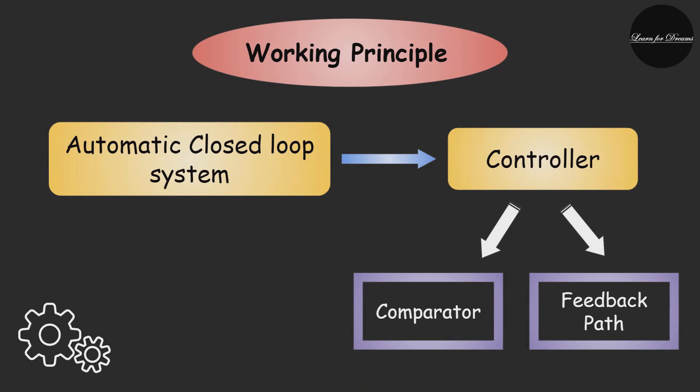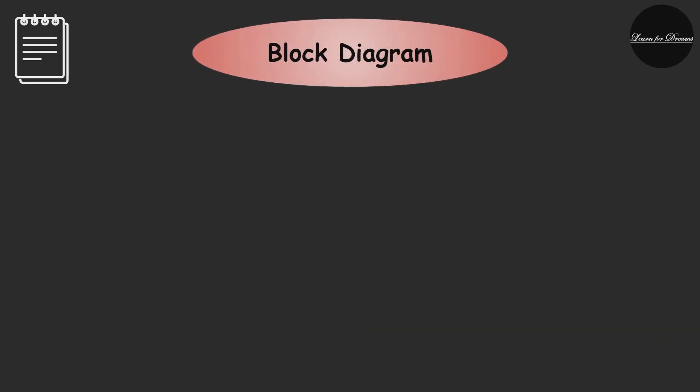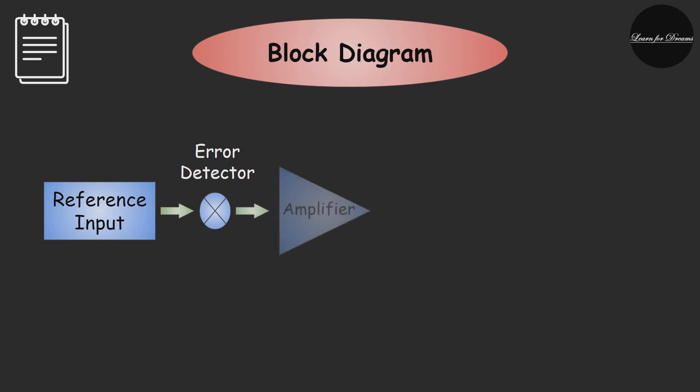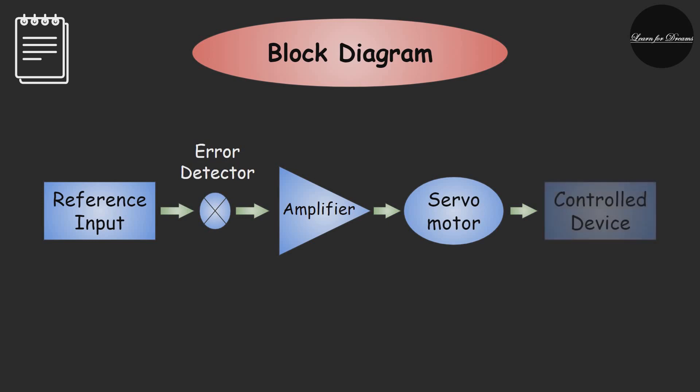This is the block diagram showing the working of a servo motor. Starting with the reference input, then there is an error detector, then the amplifier, then servo motor and the control device. From the control device a feedback will be given again to the reference input. That is called the feedback loop.